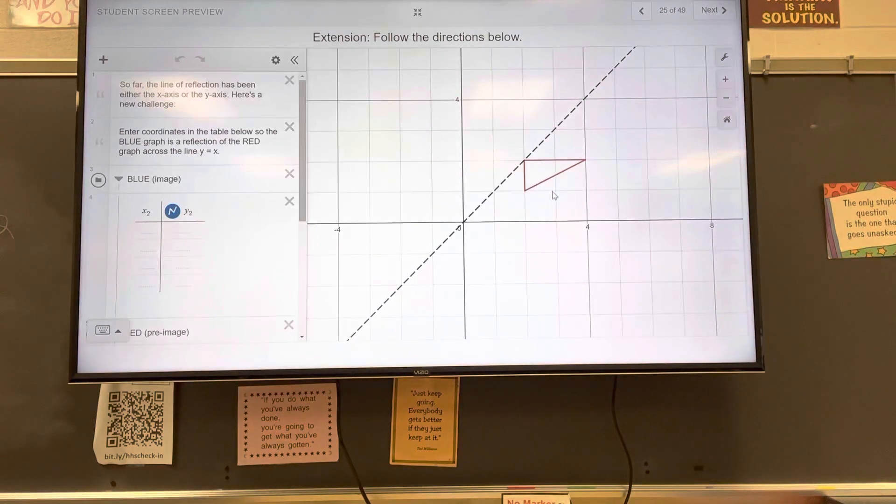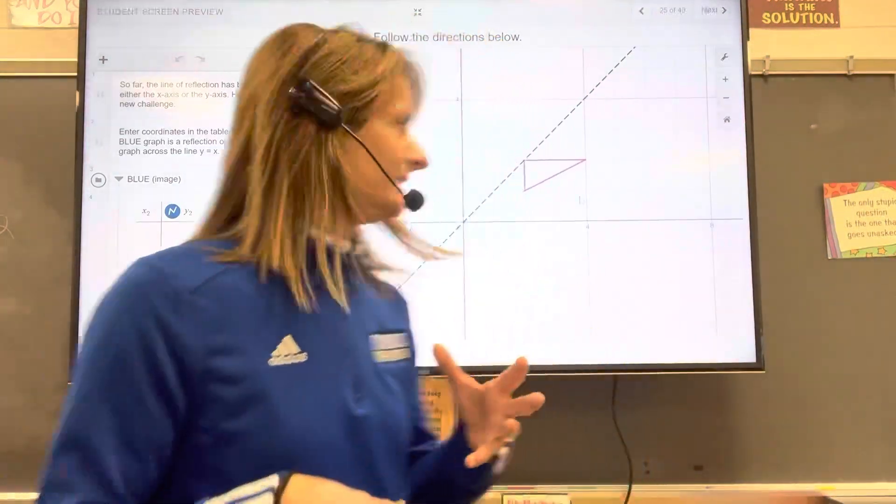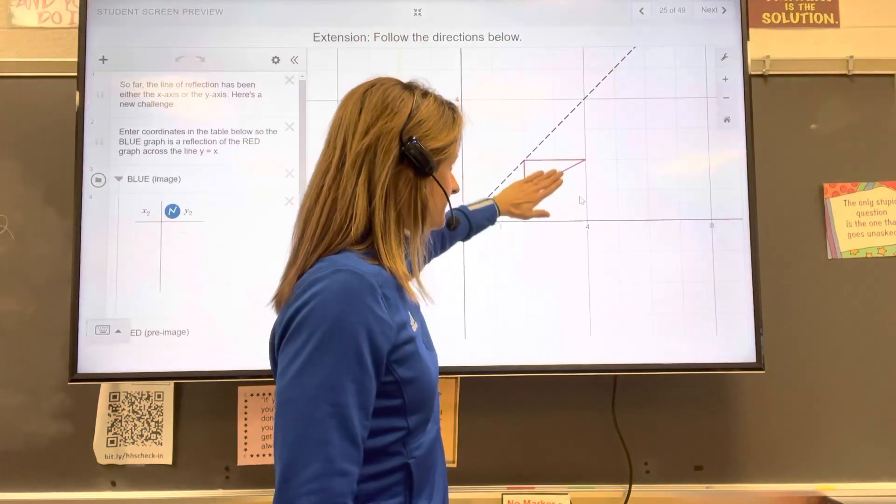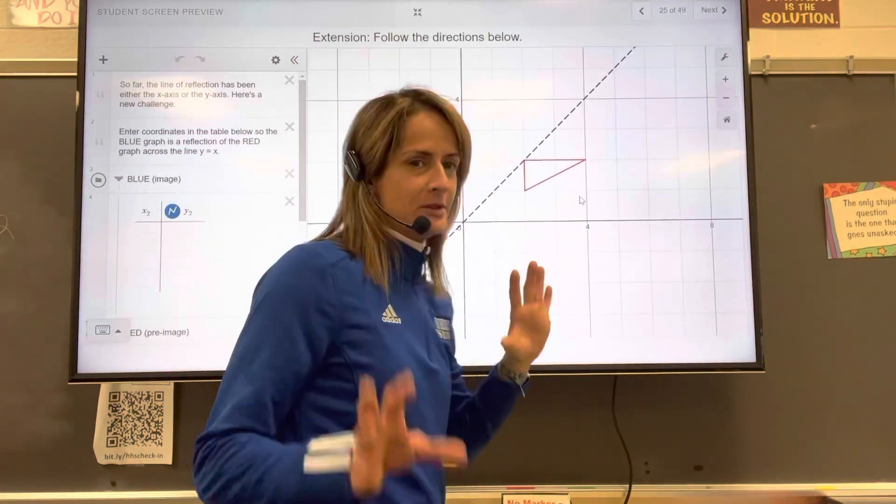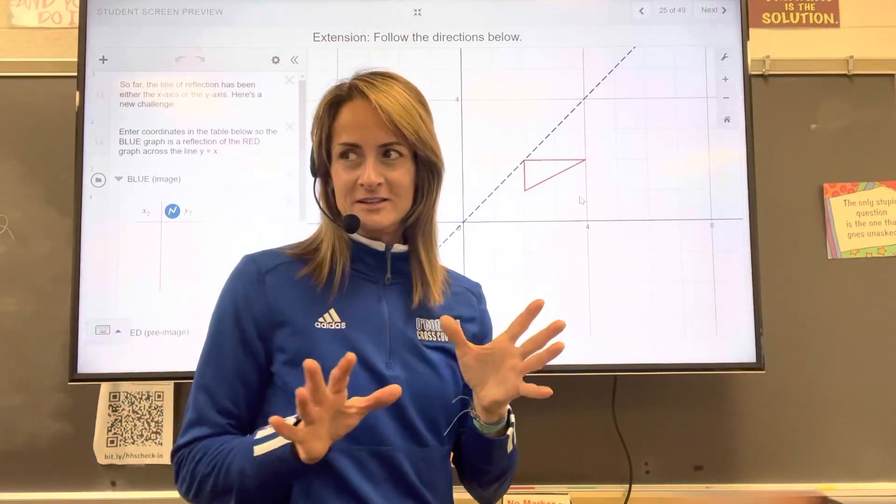So this one is asking, so in this slide, you're supposed to kind of play around and see, how do I get this red triangle reflected over this line, y equals x? And when you play around with it, did you guys get this? Have you practiced it or kind of tried different things?